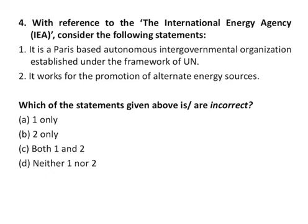Question number 4 is about the International Energy Agency. The first statement says it is a Paris-based autonomous intergovernmental organization established under the framework of the United Nations — this is wrong. The IEA was established in the framework of the OECD in 1974 in the wake of the 1973 oil crisis, not by the UN. The second says it works for the promotion of alternative energy resources — this is correct. Since we have to choose the incorrect statement, A is the correct answer.